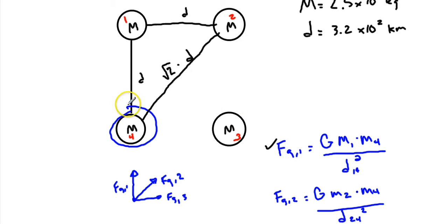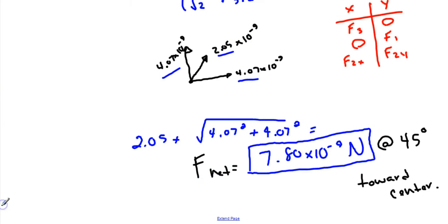So our net force, as I'm going to show here in red, is pointing always towards the center here for each of the objects. And it pulls there. It's equal to 7.80 times 10 to the negative 9th newtons. And that is gravitational force in two dimensions.